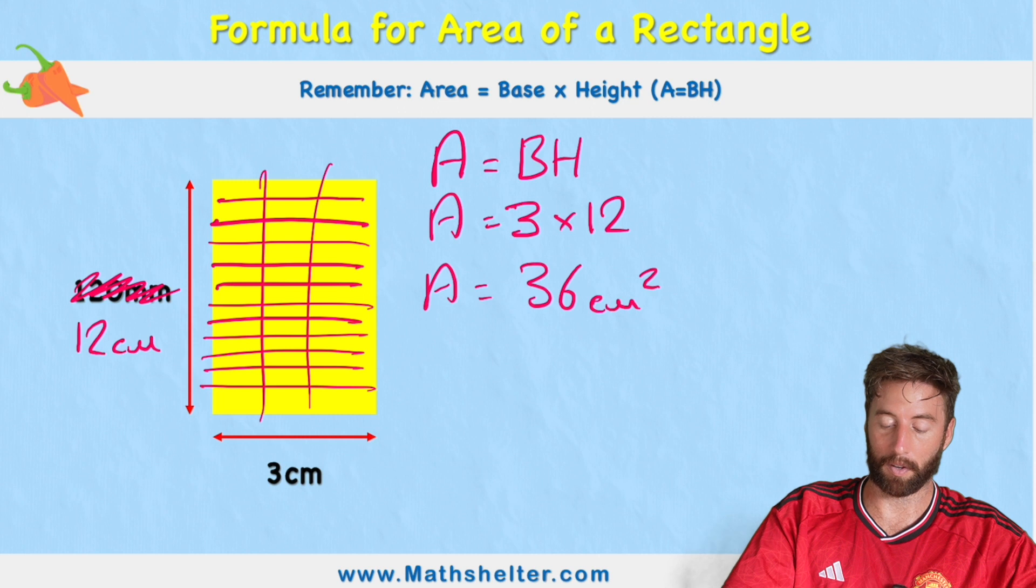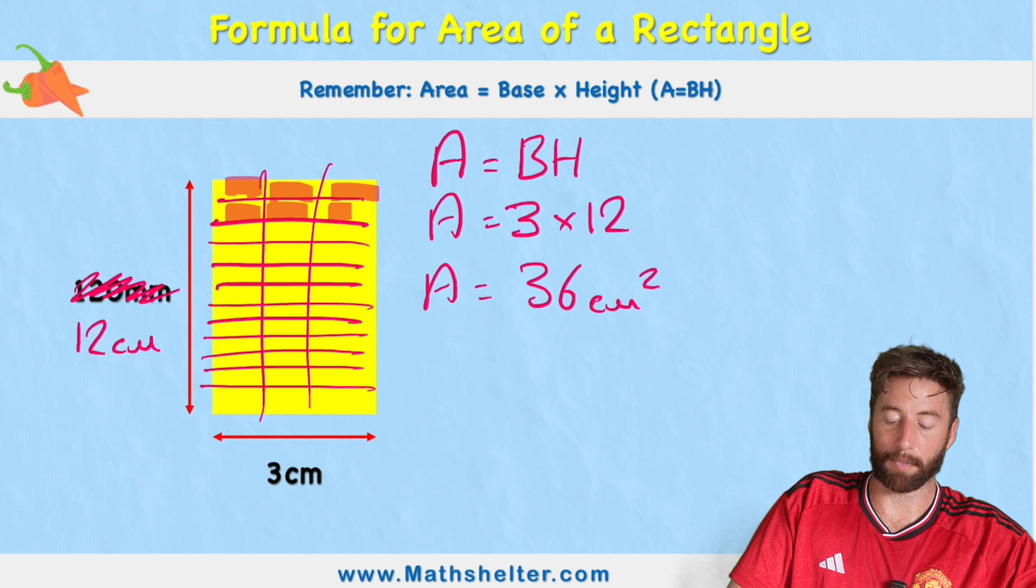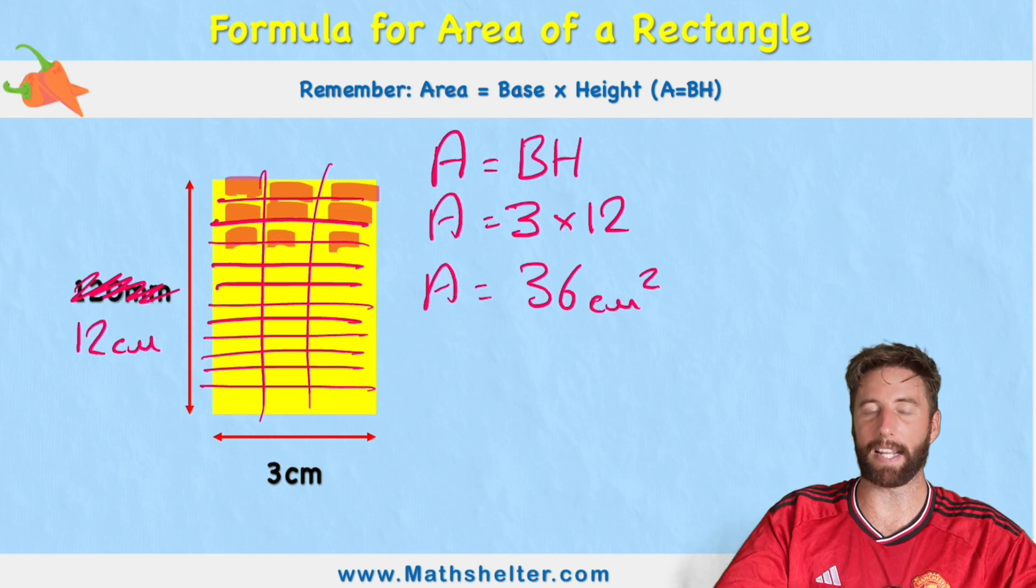And three columns. 1, 2, 3. And all we're doing is counting these individual blocks, which are each centimeter squares. And we have 36 of them. Still quite an easy challenge.